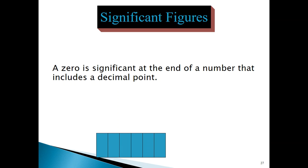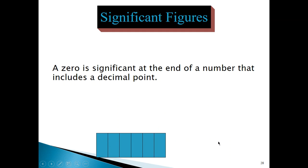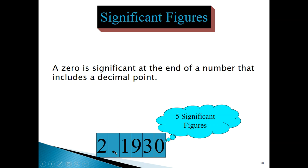Another rule: a zero at the end of a number is significant when there is a decimal point anywhere in the number. So if you have zeros at the end and a decimal point anywhere, those zeros are significant. For example, with three zeros at the end of a number that has a decimal point, those zeros are significant. In another example, one zero at the end of the number with a decimal point: the zero is significant, and therefore the total number of significant digits is five.